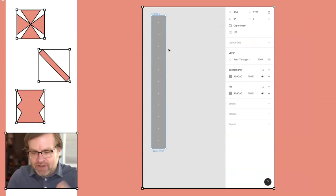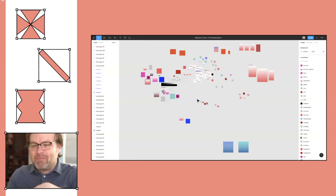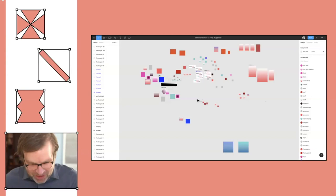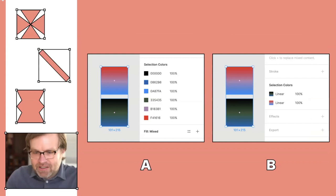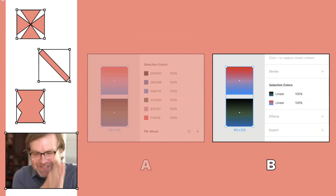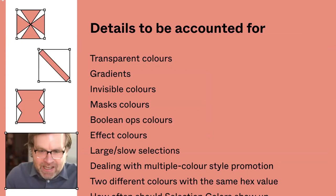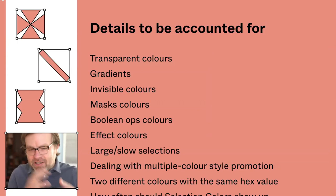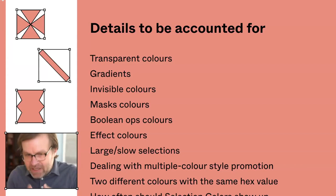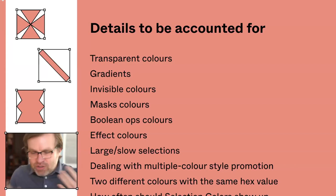We did a lot of internal testing — many bash files where a bunch of us jumped in and tried to prove selection colors wrong. We did a design critique internally, and that's where I found that everyone was right and I was wrong — everybody wanted to do the gradient option that I'd argued against. There were so many more details to account for: what to do with transparent colors, invisible colors, hidden layers, masks, Boolean ops, effects, really large selections. Did you know two colors can have the same hex value but not actually be the same color? Hex only gives you a certain resolution, but Figma actually has more resolution than 16 million colors. It's wild.